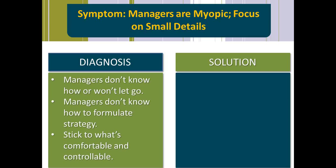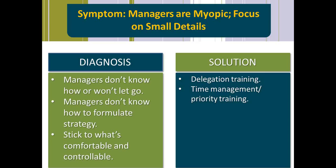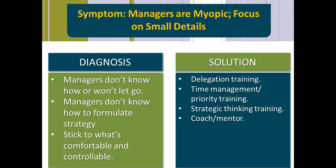So there's our diagnosis — this is what could be causing our symptom. What could be a solution? There could be many. Maybe they need delegation training, time management, prioritization training, or strategic thinking training. Maybe they need a coach or mentor to help them start to delegate and think strategically. Maybe you need to establish a new manager's network or rethink your succession process. Maybe new managers are not being identified correctly. This is an example of how the process could work: identifying a symptom, testing for it, forming a diagnosis, and then coming up with a solution.